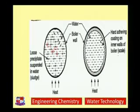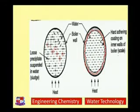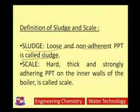You can see two types of precipitate in these diagrams. One type consists of loose, slimy, smooth, mud-like precipitate that remains suspended in the boiler vessel — this is sludge. The other type shows a thick layer of precipitate adhered to the inner wall of the boiler — this is scale. So, the loose and non-adherent slimy precipitate is sludge, while scales are hard, thick, and strongly adhered precipitate on the inner wall of the boiler.